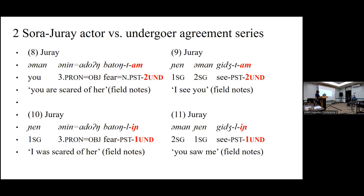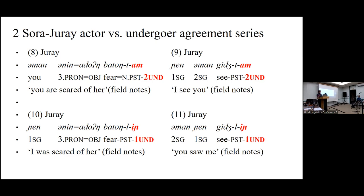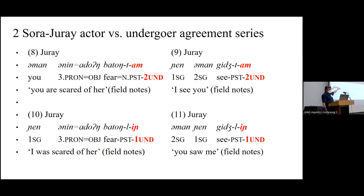Now we're going to talk a little bit about the differential marking of agent or subject in Sora. In Sora, there's a split between whether a more agentive subject or a more undergoer-type subject is encoded. The more agentive subjects are encoded with what looks formally like subject markers, and the more undergoer-type ones have object agreement. So 'I see you' takes the object form, but 'you are scared of her' also uses the object form of the second person. This is consistent across Sora — a kind of transitive split-S system.